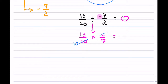I cannot reduce anything further, so now I can just multiply. That's 13 times 1, and then 10 times 7, which is 70. And don't forget, the answer is negative. So that is the first example.